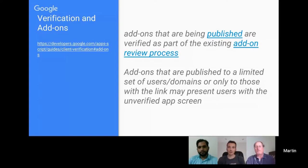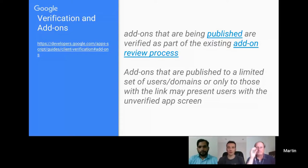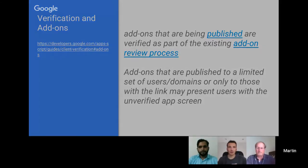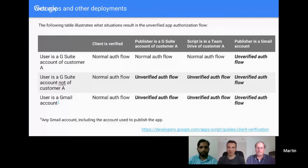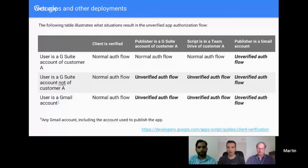Outside of add-ons, there is a separate form to fill in for verification, with a couple of requirements. For web apps and other deployments — whether you publish a web app, have a container-bound script attached to a document, spreadsheet, or form — one of the original ways of distributing those before add-ons was to give anyone view access so they could make a copy. This matrix shows what's going to trigger an authentication flow.